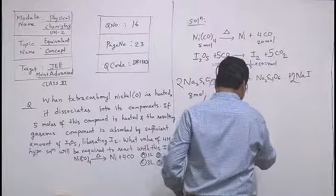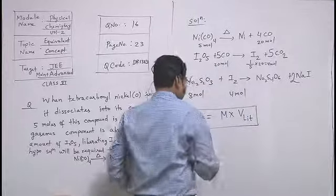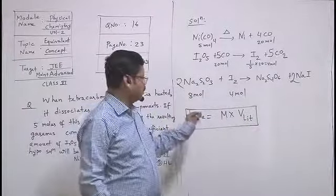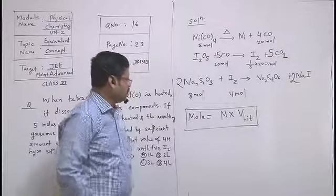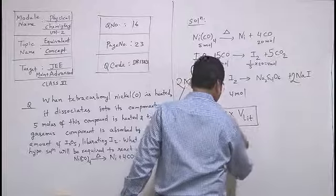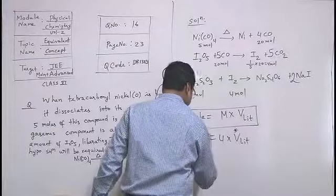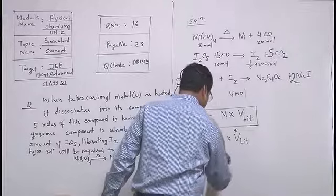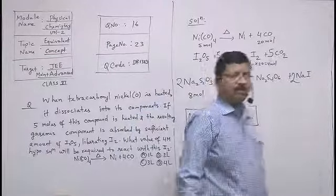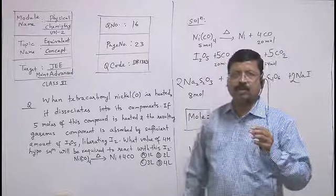M into V liter. Basically molarity formula is moles per liter. If we cross multiply, here it is 8 and here is 4. From here we find V liter. It comes to 2 liter. This is our answer. If you apply equivalent concept also,